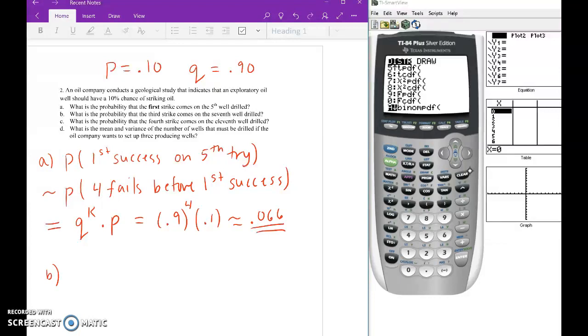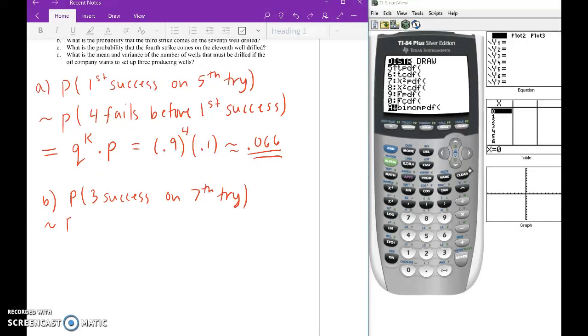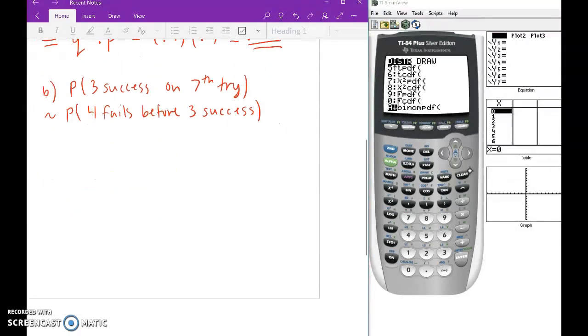All right, so let it be, what's the probability the third strike comes on the seventh well drilled? So the probability the third success is on the seventh try. So once again, I like to reword this. That's similar to the probability of four fails before the third success. Now, there's a formula for the negative binomial. And what makes this negative binomial is the fact that we're talking about more than one success here. So remember the formula for negative binomial: it's r plus k subtract 1, choose r minus 1, q to the k power, p to the r power.